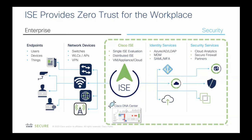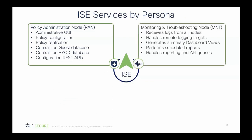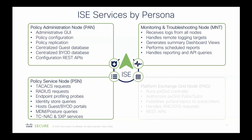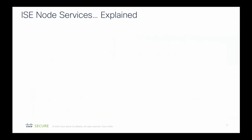PX Grid is usually used on the security side. After we authenticate users or endpoints with identity services, we can share what we call context out to security partners. ISE has different personas: the PAN node where you do all configuration, the M&T node or persona for logging, the Policy Service Node or PSN, and the Platform Exchange Grid node or persona where all the PX Grid services run.